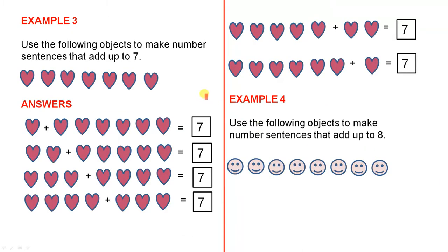Example 3, use the following objects to make number sentences that add up to 7. So 1 plus 6 equals 7, 2 plus 5 equals 7, 3 plus 4 equals 7, and 4 plus 3 equals 7. We also have 5 plus 2 equals 7, and 6 plus 1 equals 7.